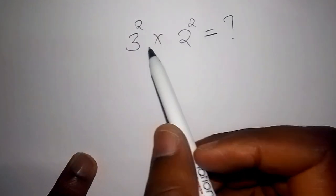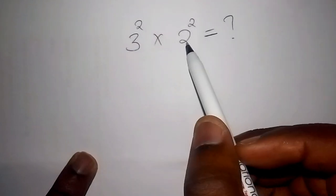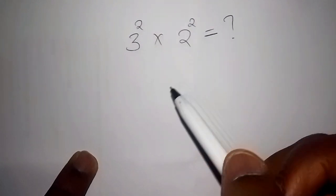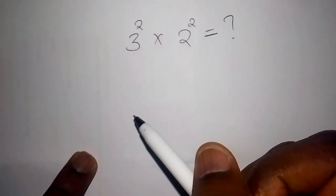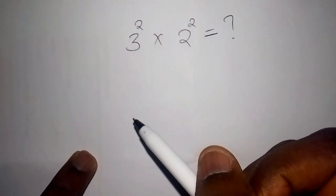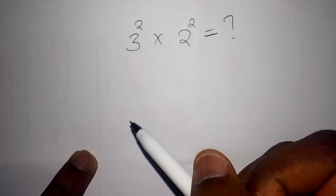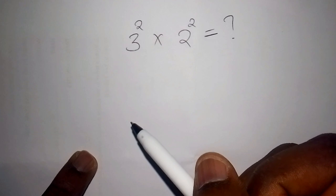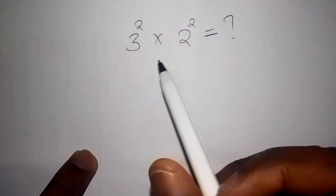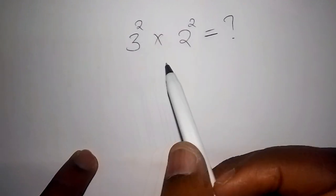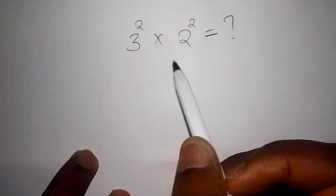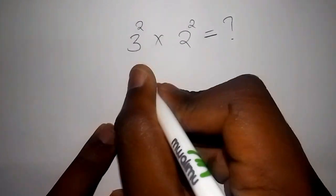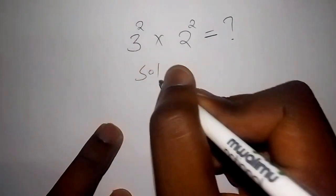We have three to the power of two multiplied by two to the power of two. Before I proceed, let me introduce myself — I am Teacher John, and I've been teaching maths in high school for a very long time. I hope you've worked it out, so let's now give it the solution.